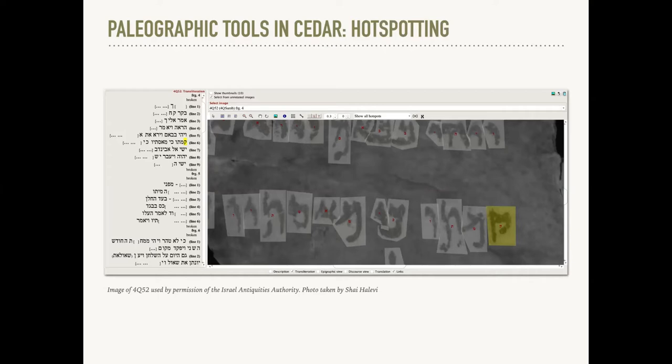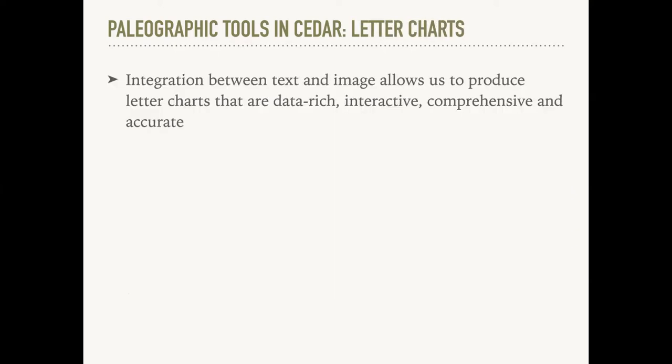Here the gray polygons are the hotspots drawn by the researcher — in this case, me. The little red characters in square scripts show which character each hotspot is linked to, and clicking on any character in either the transcription or the image brings up yellow highlighting. This tool is already useful for documenting readings of damaged manuscripts, but what gets really exciting for paleography is what we can do with the hotspots we've created. I'd like to show you the various kinds of letter charts we can produce and then how we can test reconstructions directly on images of a damaged manuscript.